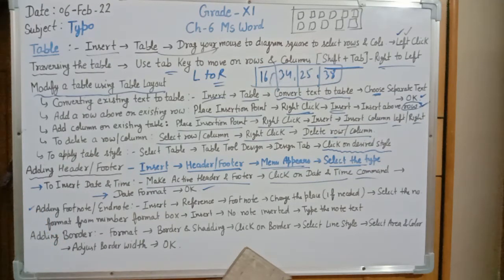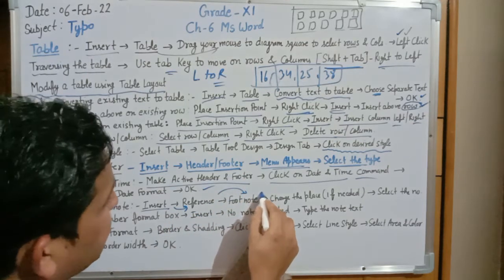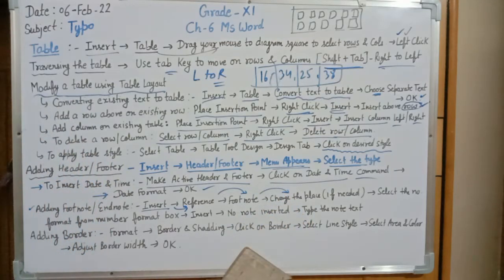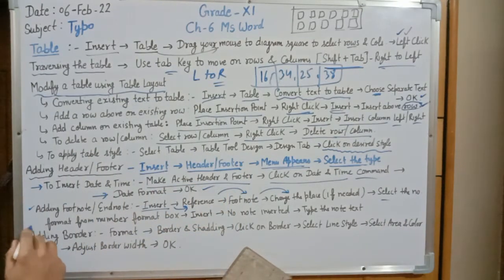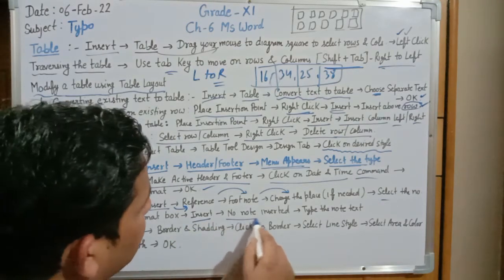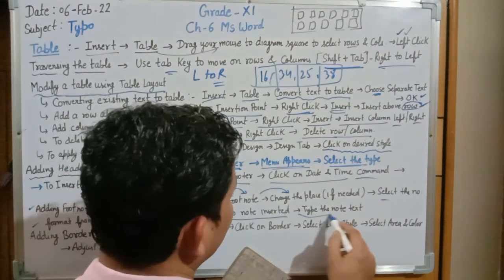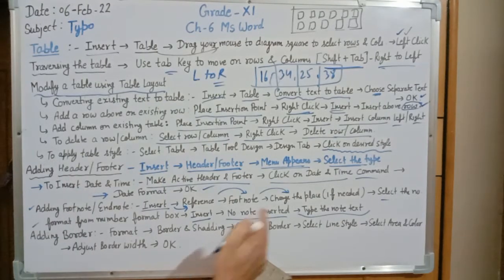To insert a footnote or endnote as a reference at the bottom: go to Insert, then go to the Reference option, and select Footnote. You can also change the position of the footnote. Select the number format from the number format box and then press the Insert button. The footnote number is inserted into your text — then type the note text where you want to write the reference.